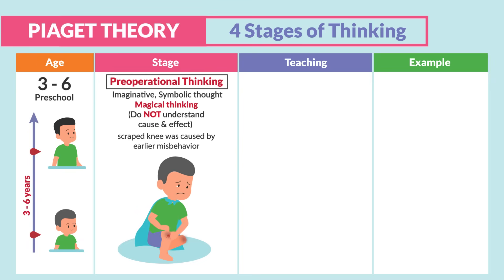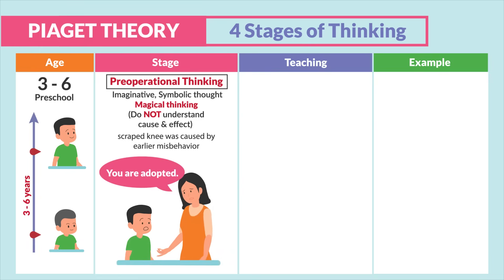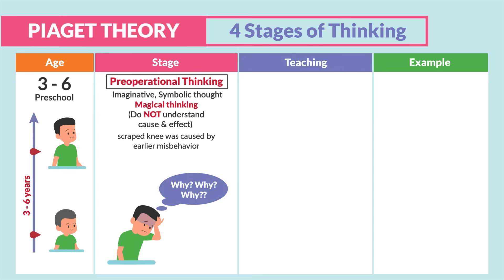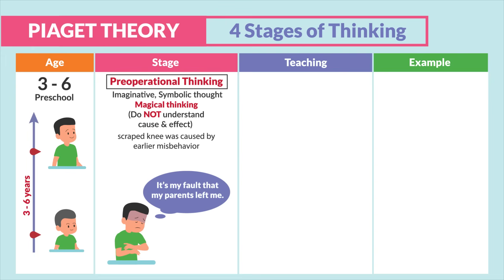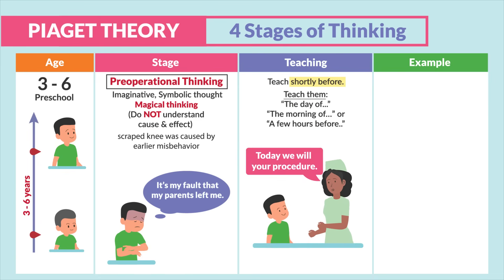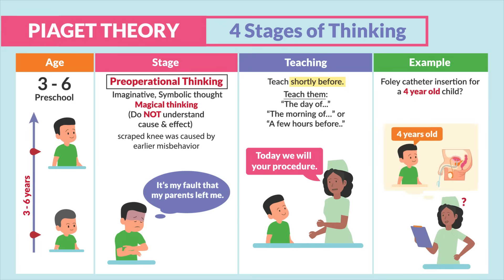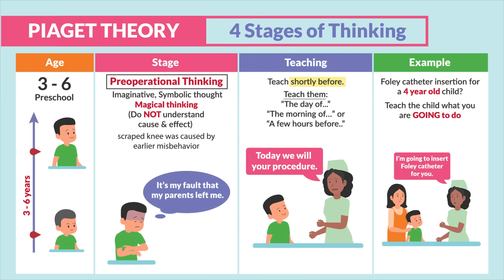They do understand the future and the past. A big exam example: if a child is adopted and finds out at this age, they often feel responsible for being adopted and find it difficult to understand, thinking it's their fault — since they don't understand cause and effect. This was a big one on the NCLEX. In terms of teaching, teach the child shortly before a procedure — the day of, morning of, or a few hours before. For example, for a Foley catheter insertion for a four-year-old, teach the child what you are going to do.